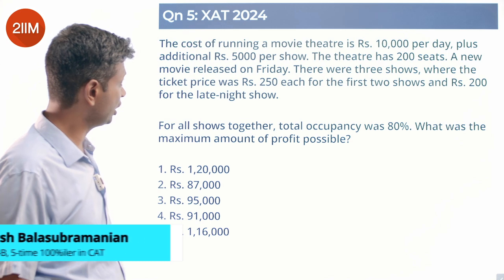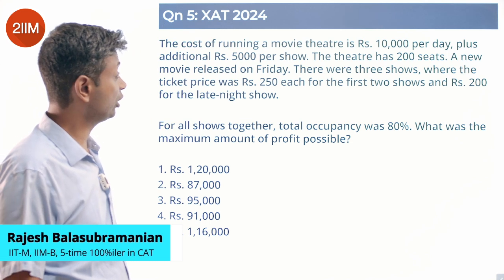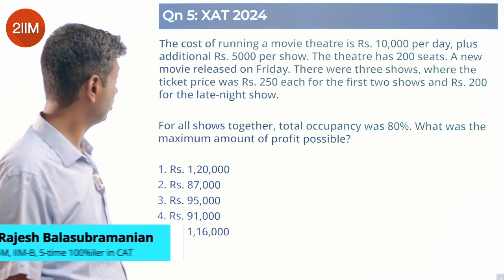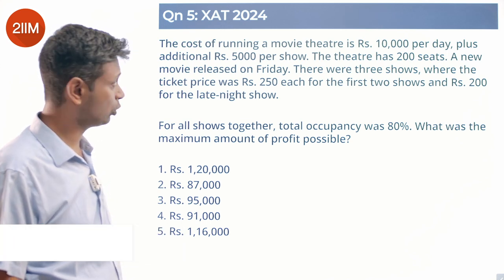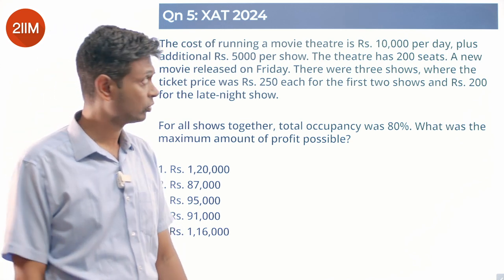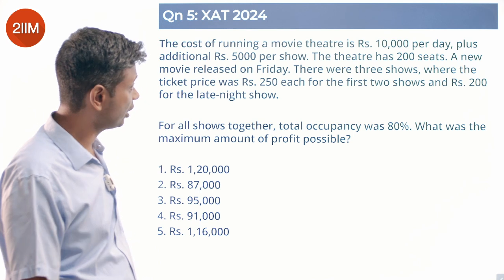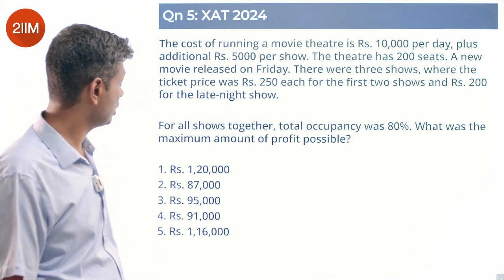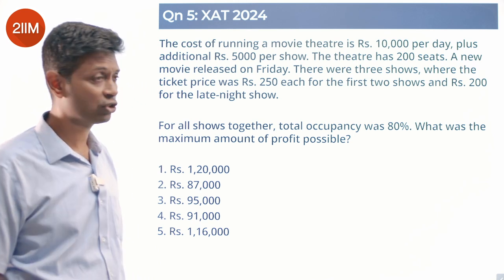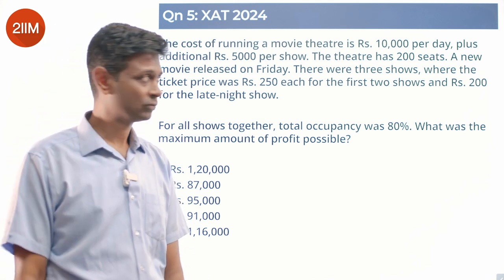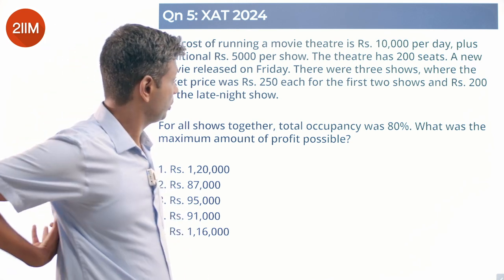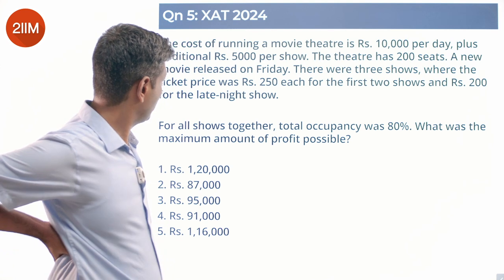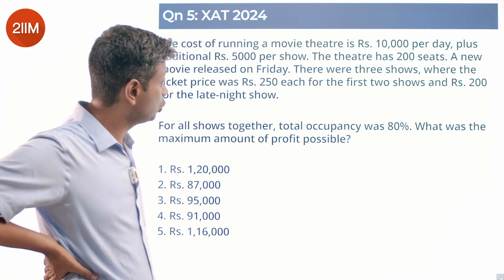The cost of running a movie theater is 10,000 rupees per day plus an additional 5,000 per show. The theater has 200 seats, and new movies are released on Friday. There were three shows, where the ticket price was different for each.